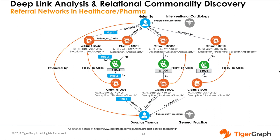Let's do a quick recap. We have already covered the use case of uncovering a referral network in the healthcare and pharmaceutical industry, which leverages both deep link analysis and relational commonality discovery capabilities of a native parallel graph. Relational commonality discovery and computation are used by the healthcare and pharmaceutical industry to identify referral networks. Please review the TigerGraph testimonial for Amgen, the biotech pharmaceutical giant, available on YouTube as well as the TigerGraph.com site.